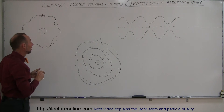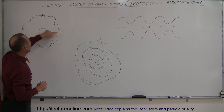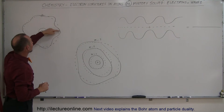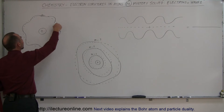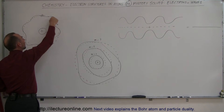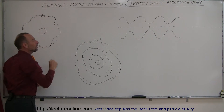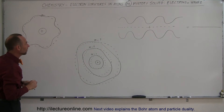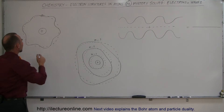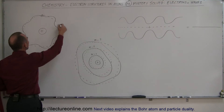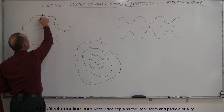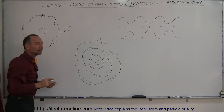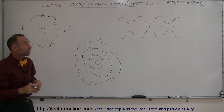Now, if it does, that means that when the electron comes around, and the number of wavelengths it took to go around once was not equal to an integer number of wavelengths — let's say the path around the nucleus was equal to three and a half wavelengths — then by the time it reaches back where it started, it will be 180 degrees out of phase.